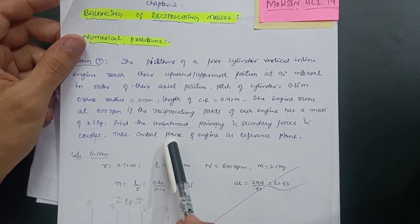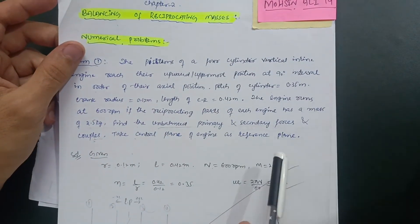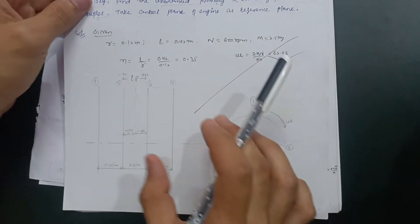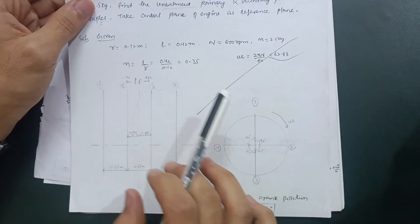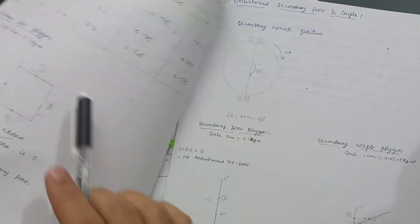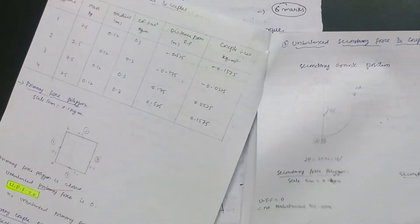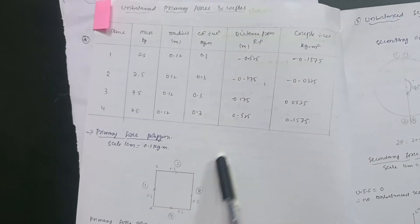Take the central plane of the engine as reference. Like this, there will be questions. You have to draw first the diagram of these pistons, then primary crank position, then you can go for the polygon diagram.